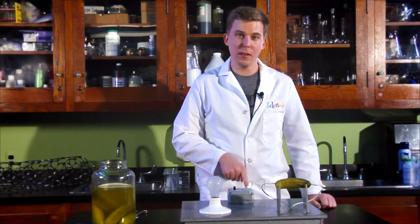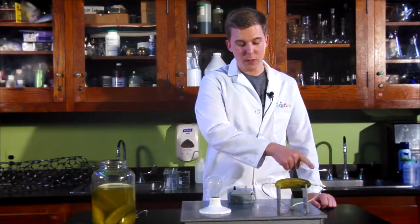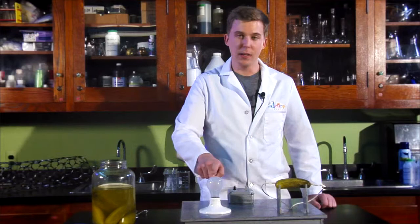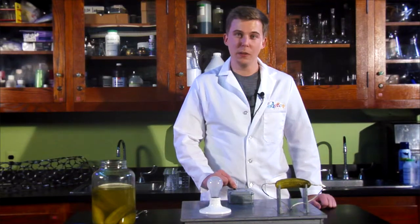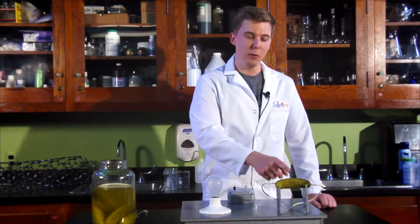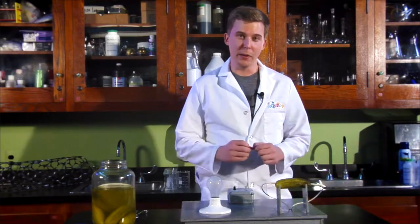When we turn on the electricity, electricity will flow through the pickle and light up our light bulb. But when we remove the light bulb out of the circuit by flipping our pickle switch, all the electricity will be directed to the pickle and the pickle will glow.